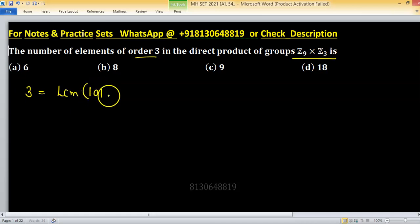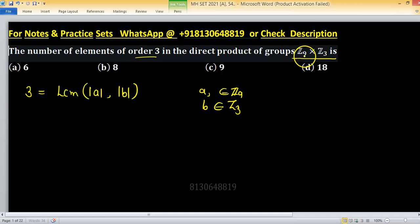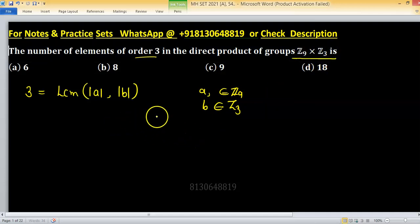order a comma order b. a is coming from Z9 and b is coming from Z3. So we want such elements, or number of such elements, that are having order 3 and they are coming from Z9 cross Z3.